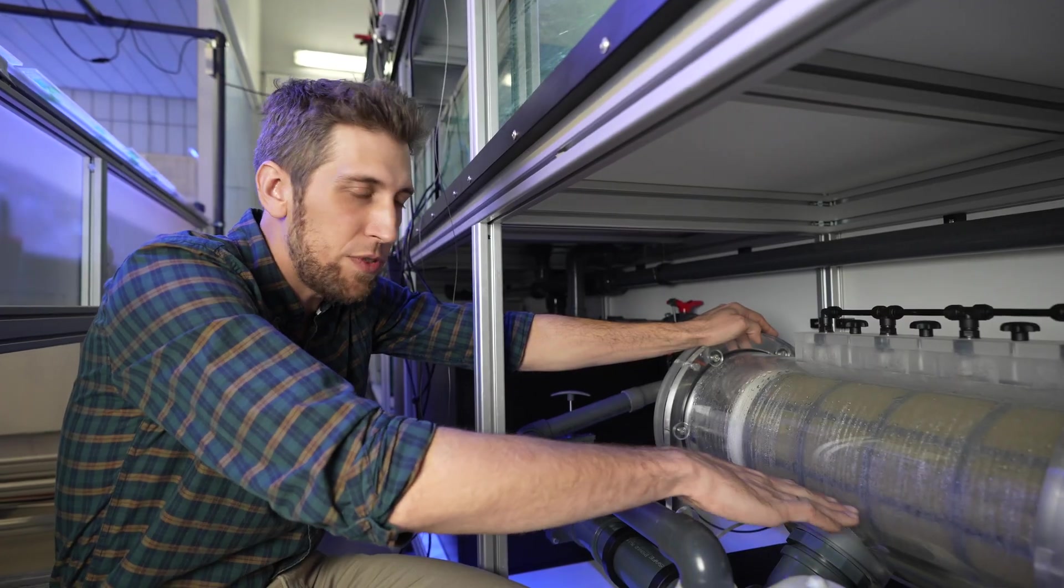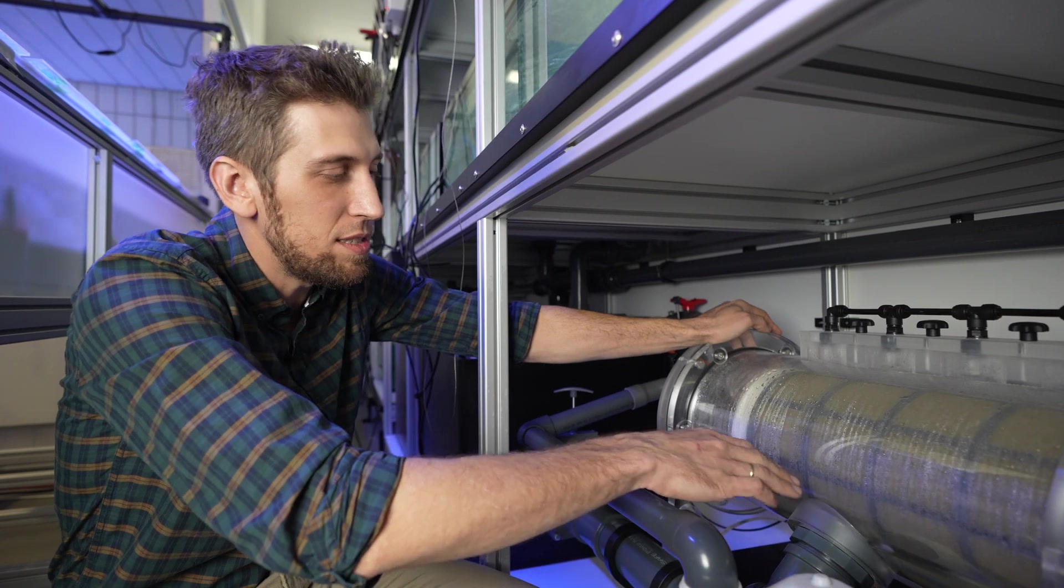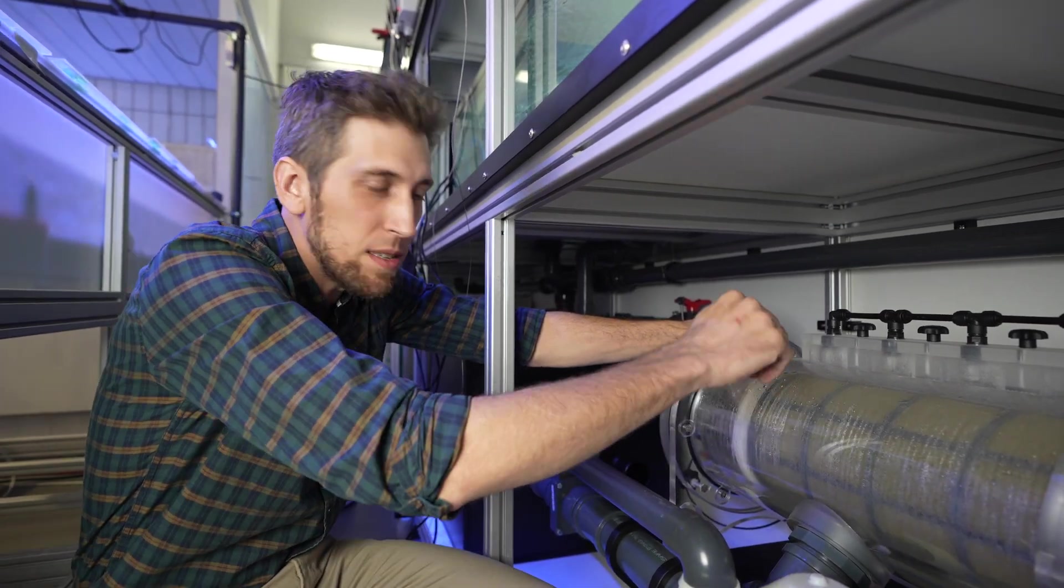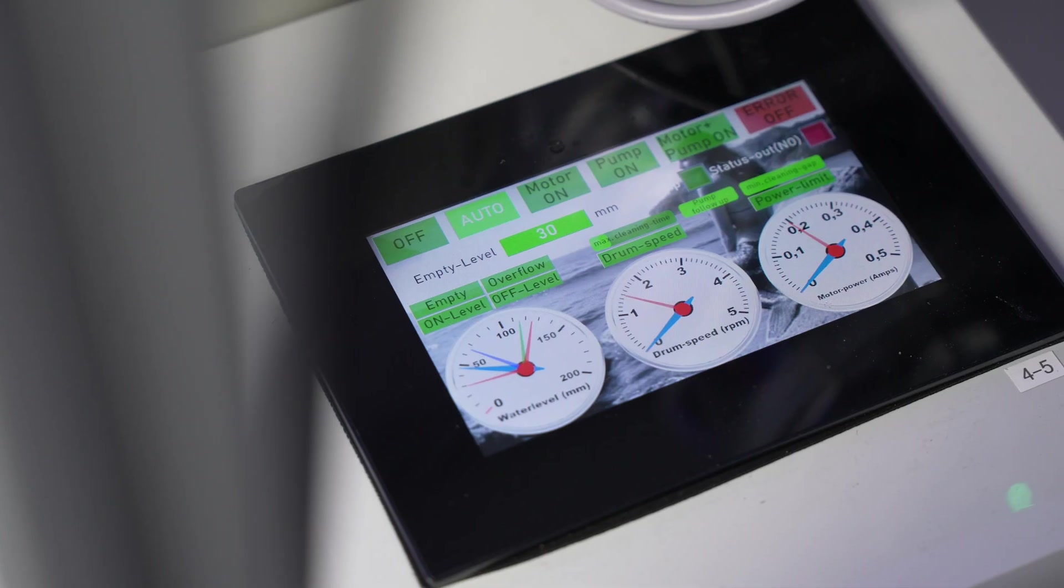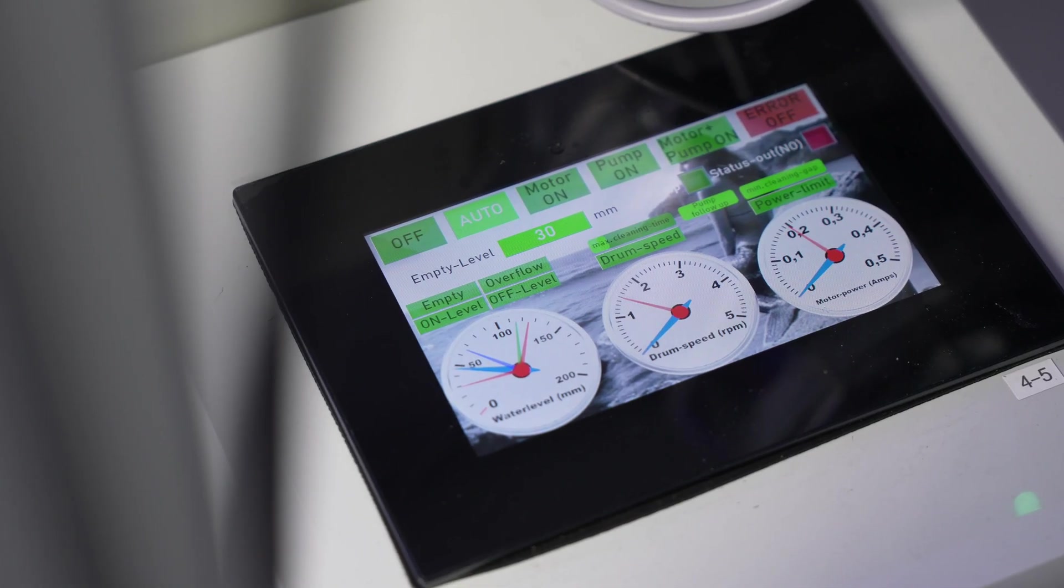So after a while, the mesh fills up with sediment and particles and stuff, and the water doesn't flow as easily anymore. So the water level inside the drum rises, and then at a certain level, which you can program freely as you want, it's being washed out.